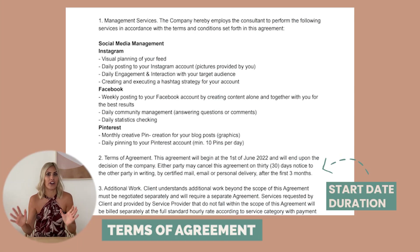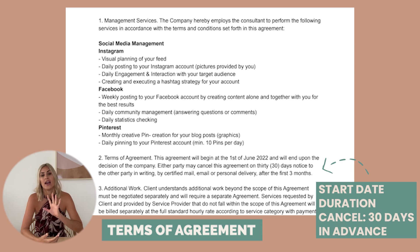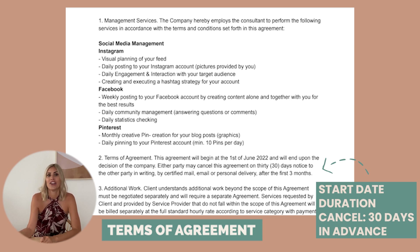Obviously, at the time the client gets the contract, they already agreed to three months — you would have said that on the discovery call. Then either party can cancel the contract with a 30-day advance notice. So that means you can't quit the contract on the 30th of June and say you don't want the services anymore as of July. You will still have a full month of social media management and the client still has to pay for that.